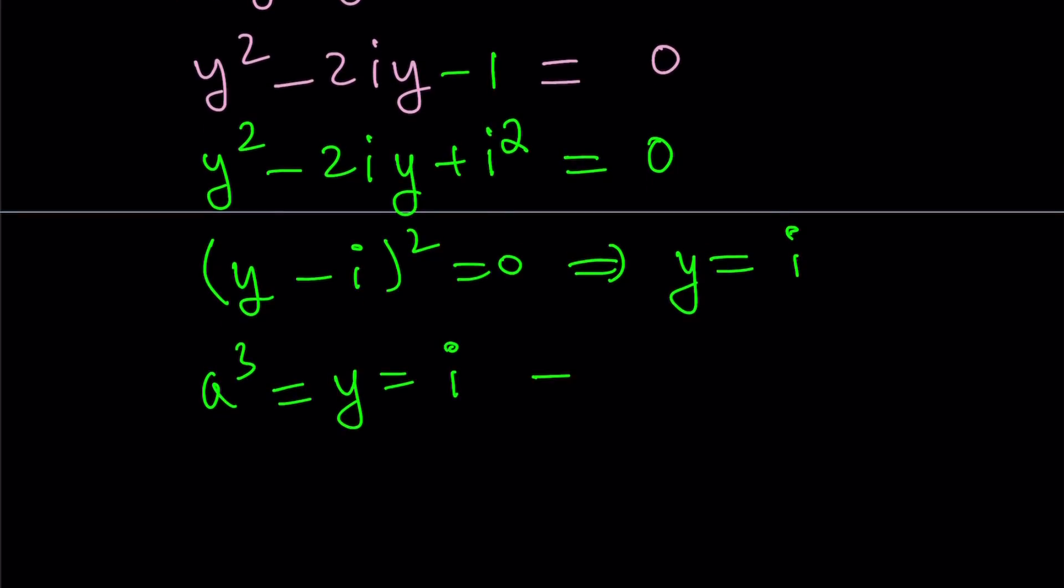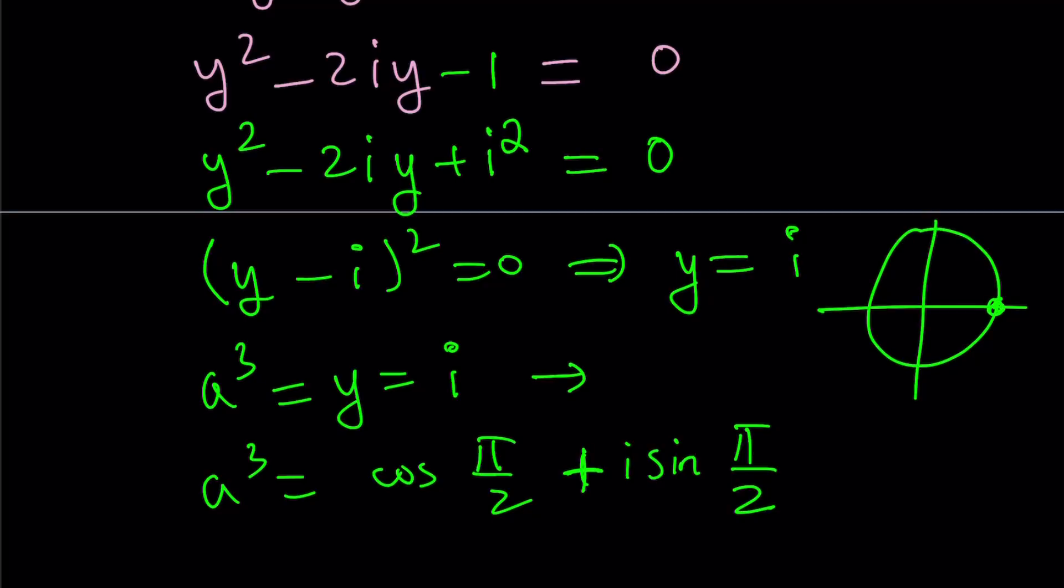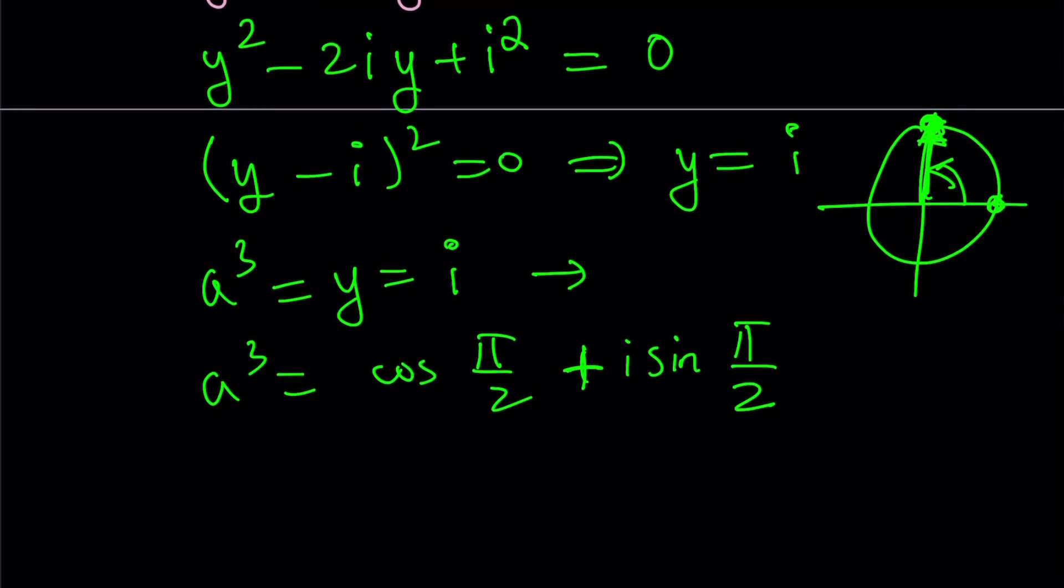So we have the cube root of i. Let's look at the smallest angle that satisfies it. And since i can be written as cosine pi over 2 plus i sine pi over 2, notice that its modulus is 1 in this case. The angle is pi over 2 and its modulus is 1. So it's on the unit circle. In this form, it's very easy to find the cube roots. All you have to do is divide the angle by 3. That's going to be cosine pi over 6 plus i sine pi over 6.